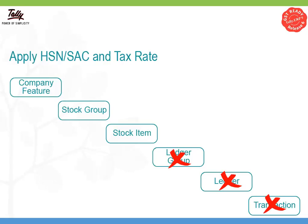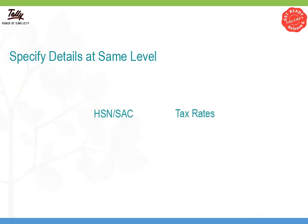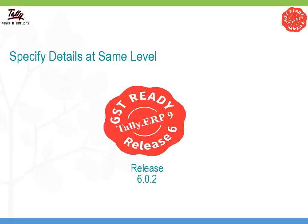If both details are found at any level, it will apply the same and not proceed further. We recommend that both HSN, SAC and tax rate details be specified at the same level. Sometimes you may want to override the settings specified in the masters. With Tally ERP 9 release 6.0.2, you can do this conveniently.